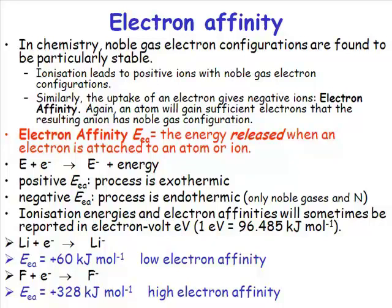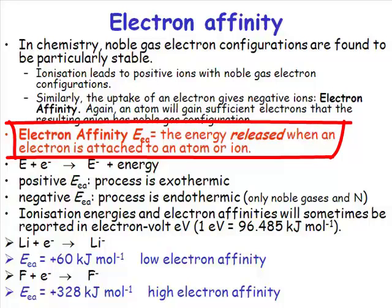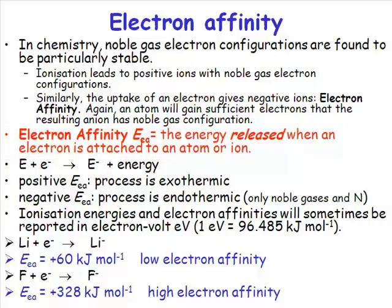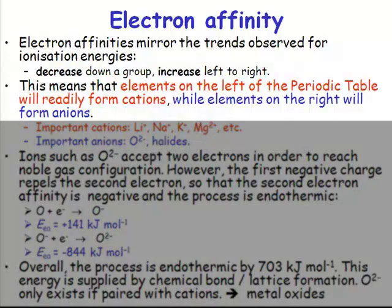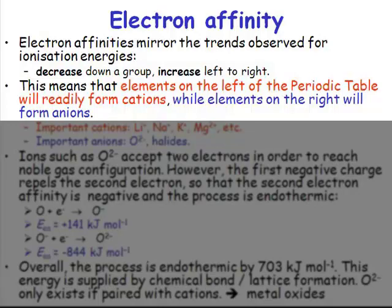Let's remind ourselves what electron affinity is. Electron affinity is the energy released when an electron is attached to an atom or ion. There is this wonderful concept of effective nuclear charge, which increases as we go from left to right across the periodic table. The stronger the nuclear charge, the more favorable it's going to be to add an electron. Electron affinities mirror the trends seen for ionization energy for essentially the same reasons — they decrease as you go down a group, and increase from left to right because effective nuclear charge is increasing, so the pull of the nucleus on additional electrons increases.